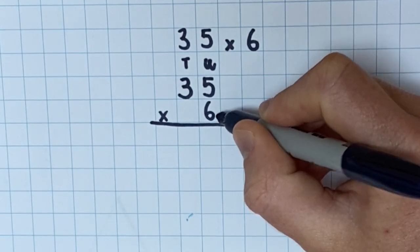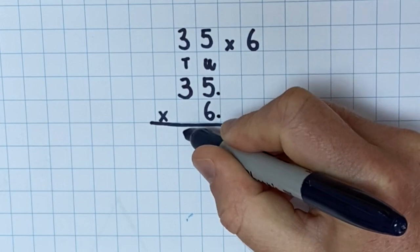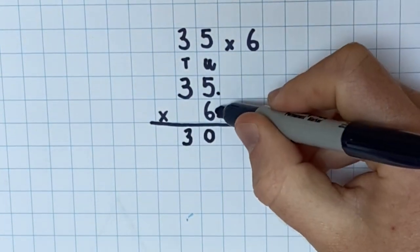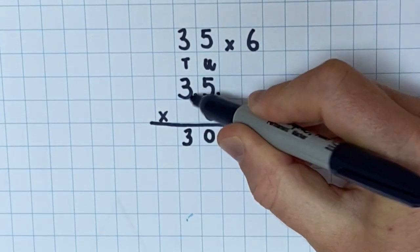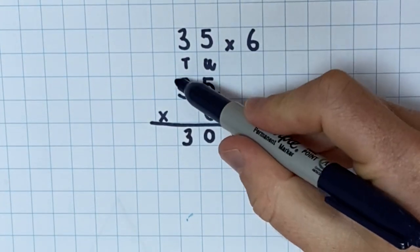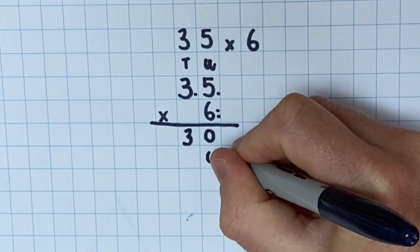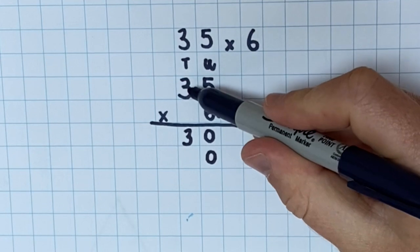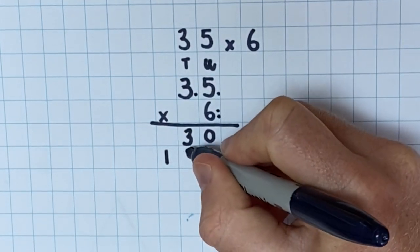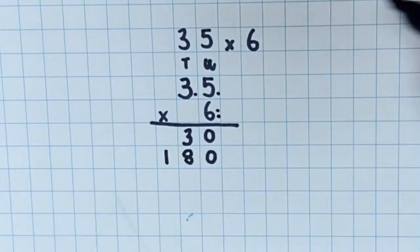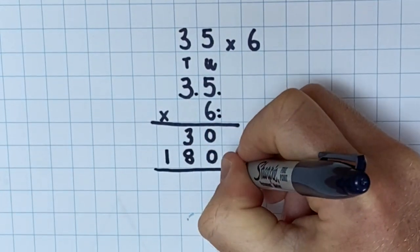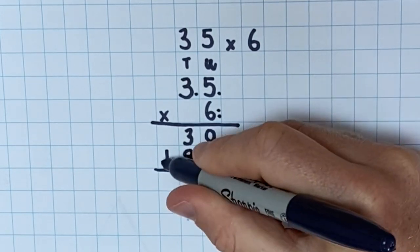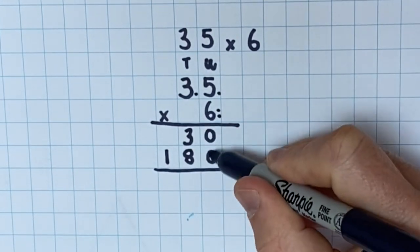So watch, 6 multiplied by 5. The answer to that is 30. Then I'm going to do 6 multiplied by 3. But because 3 is actually 30, I need to put a 0 down first. So 6 multiplied by 30 is 180.